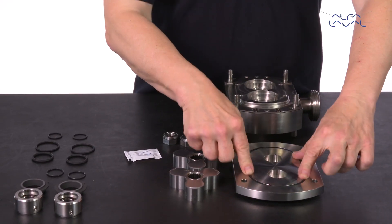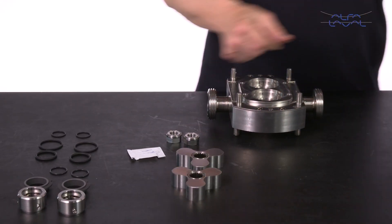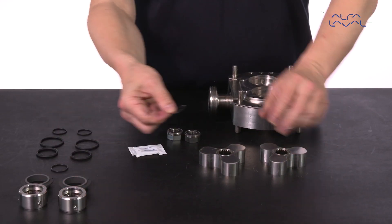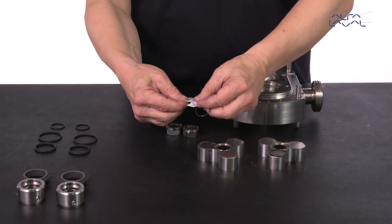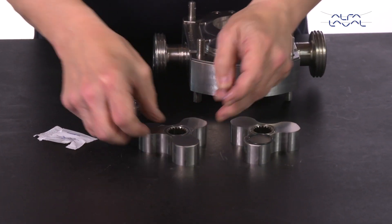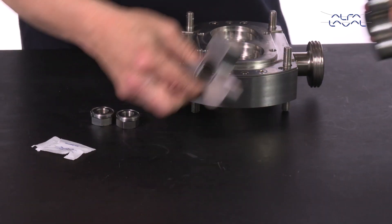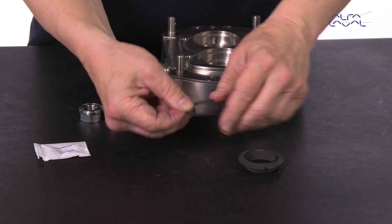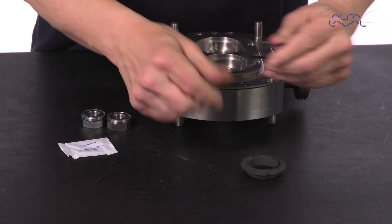Then replace the O-rings in the rotors. Lubricate the O-rings and fit them into the stationary seal ring. Then mount them. Lightly lubricate the O-rings and fit them onto the rotary seals.